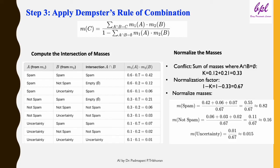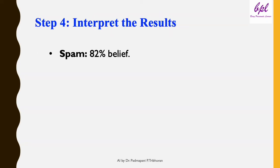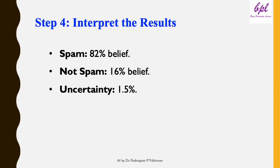After normalization, the masses are: spam = 0.82, not spam = 0.16, and uncertainty ≈ 0.015. Step four — the final belief values indicate 82% confidence that the email is spam, 16% that it is not spam, and uncertainty of 1.5%. Based on these results, the system would classify the email as spam. This example demonstrates how DST allows us to combine multiple sources of evidence while accounting for uncertainty. It's a powerful tool for reasoning under uncertainty in AI systems.